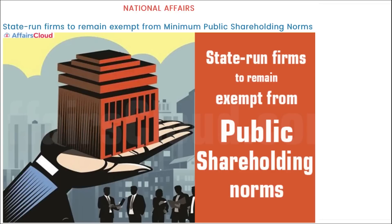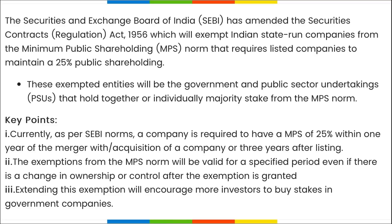State-run firms remain exempt from minimum public shareholding norms। SEBI ने amend किया Securities Contracts Regulation Act जिससे India की state-run companies को minimum public shareholding से exempt किया जाता था, जिसमें आता था कि उन्हें कम से कम 25% शेयर रखने हैं। इस exempt entities होंगी government और public sector — यह था MPS norm।